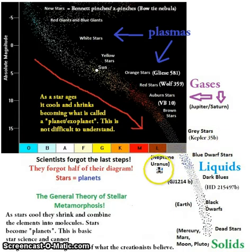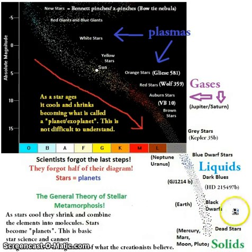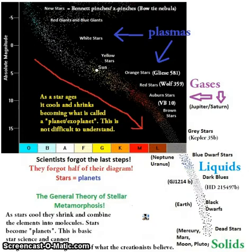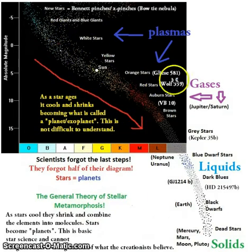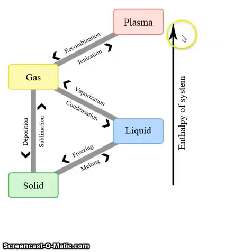Those gas giants then condense into liquids — blue dwarf stars, gray stars, Uranus, Neptune — which then solidify eventually in their interiors and become solid stars such as black dwarfs and Earth. And then when they continuously cool, they become objects like Mercury, Mars, the Moon, and Pluto — completely dead worlds with no atmosphere, no magnetic field, nothing.